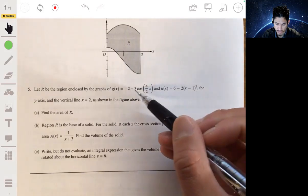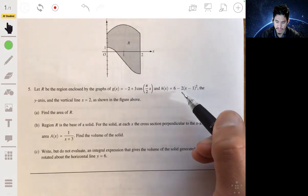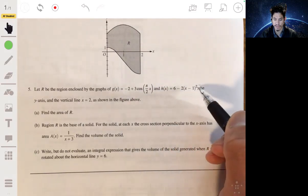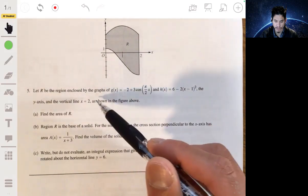So g(x) is a trig function, negative 2 plus 3 cosine of π/2 x, and h(x) is 6 minus 2 times the quantity (x - 1) squared. It's also bounded by the y-axis and the vertical line x equals 2.